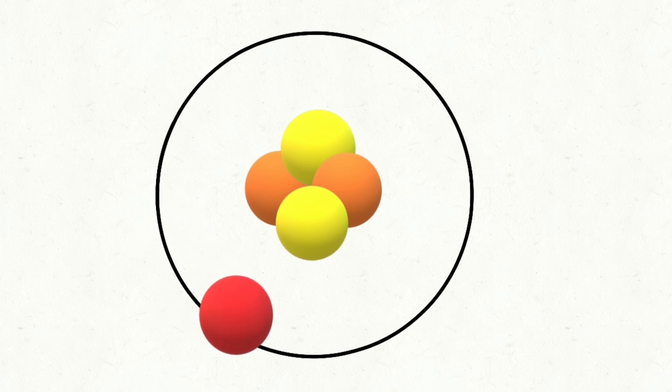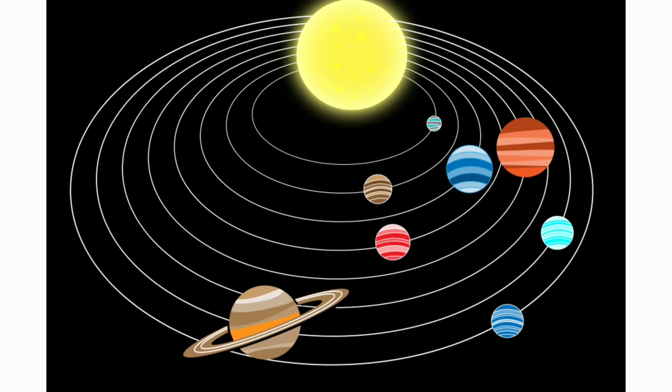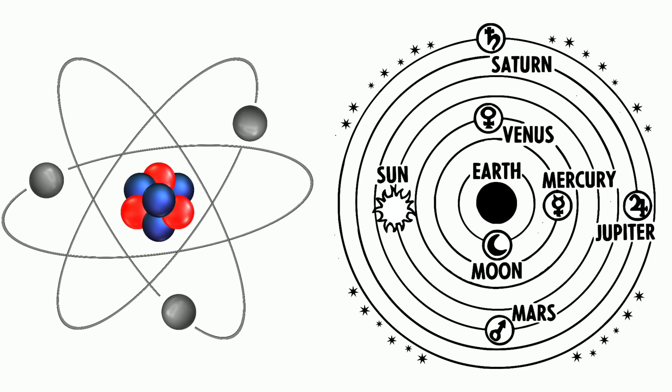He imagined the nucleus to be positively charged, situated at the center, with electrons revolving around it, resembling our solar system. It's for the same reason that his model is known as the planetary model.